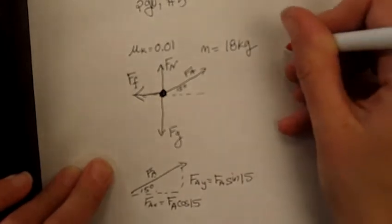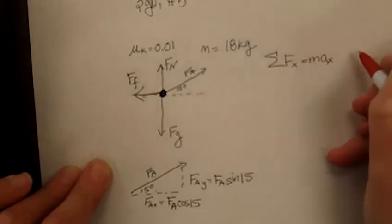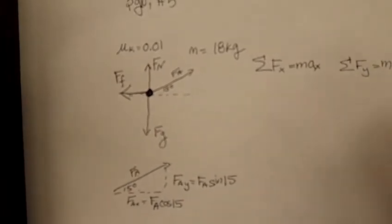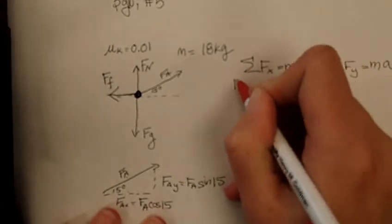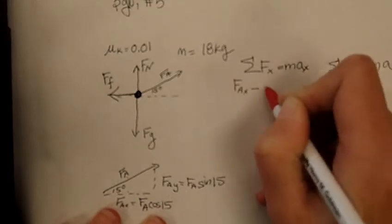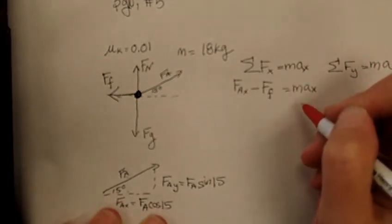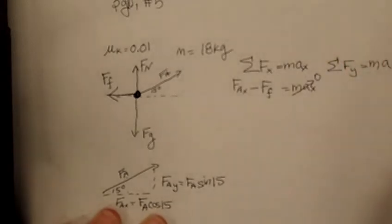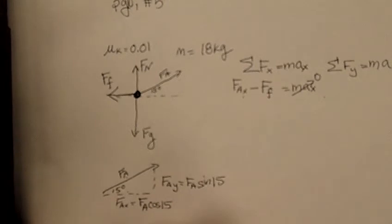So the next thing I'm going to do is I'm going to write out my Newton's second law equation. So I have sigma Fx equals M Ax, and I have sigma Fy equals M Ay. And I'm going to write both of those out. For the speed, I know that my acceleration is going to be 0. And so I know that FAx minus FF equals 0.